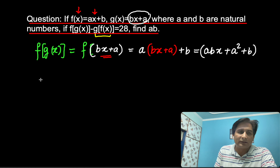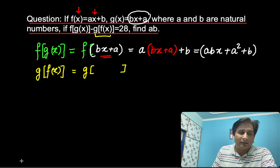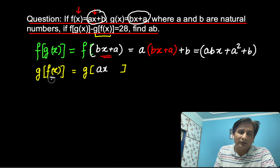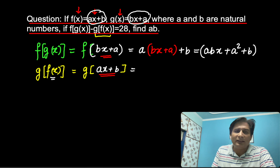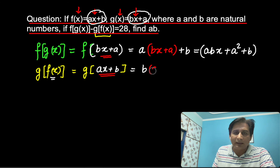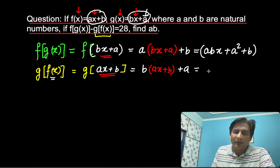Now let us find g(f(x)). We replace x in g with f(x), which is given as Ax plus B. So g(Ax + B) means replacing x with Ax plus B in g: B times (Ax plus B) plus A, which gives ABx plus B squared plus A.